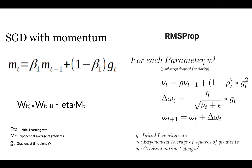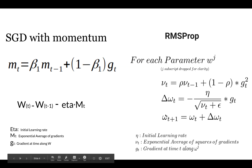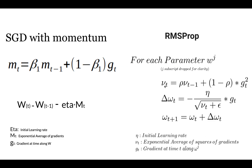For RMSProp, the difference is that we use root mean square. Here rho plays the same role as beta1. The key difference is that gt squared — the squared gradient term — is used instead of the plain gradient. For updating the weight, delta w equals eta divided by the root mean square of VT plus epsilon, multiplied by gt. Epsilon is added so we never divide by zero.